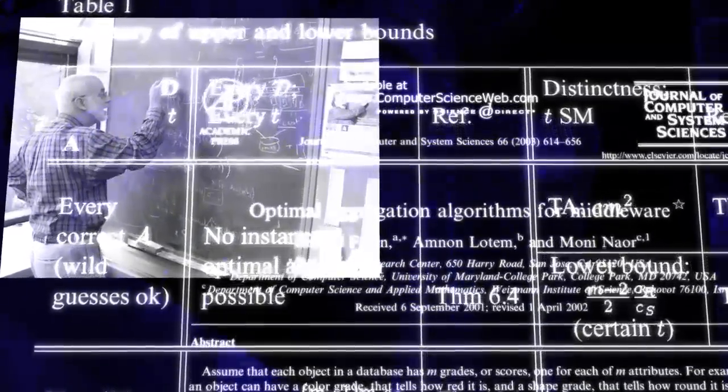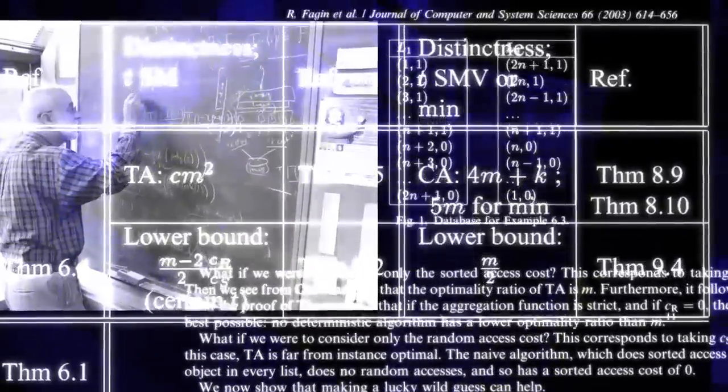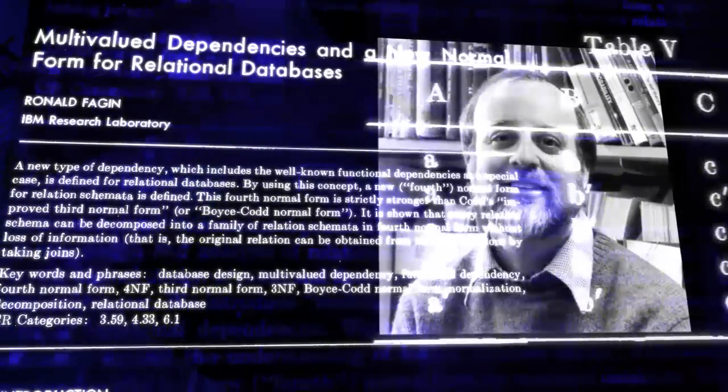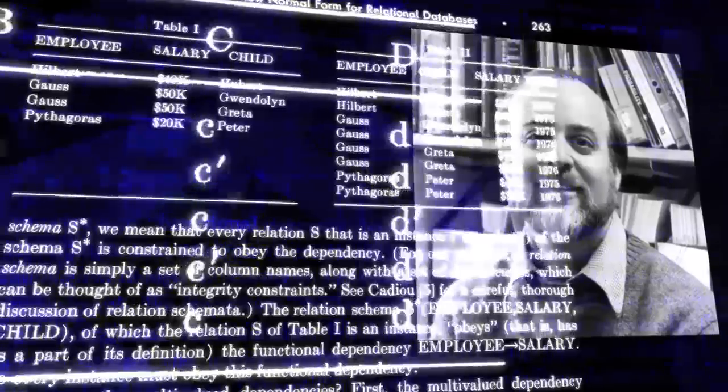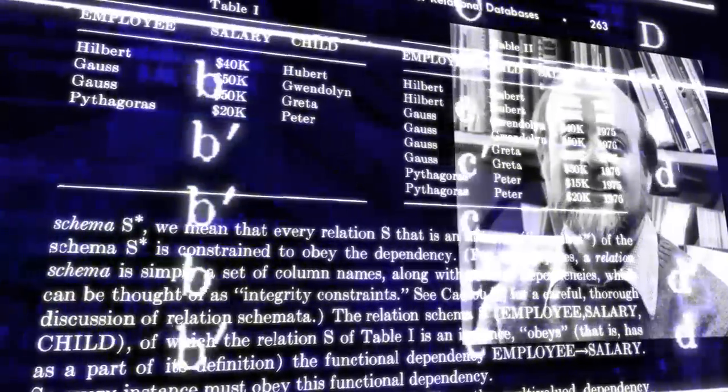He has introduced fundamental concepts and algorithms, many of which are now standard and known by practitioners in the field. His groundbreaking contributions include concepts of multivalued dependencies and the Fourth Normal Form, introduced in 1977. The Fourth Normal Form formalized the idea that unrelated data should not be stored in the same table. This played an important role in database design and query processing. The form is now universally accepted and included in all standard database textbooks.